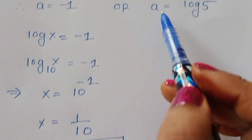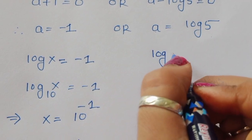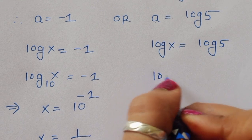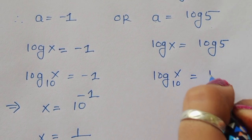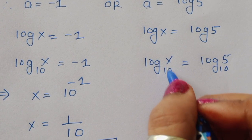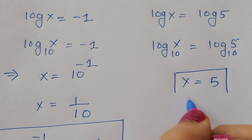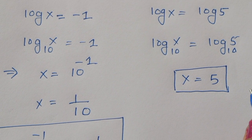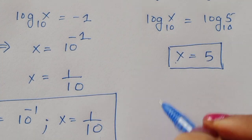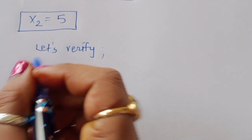For the second equation, a = log(5), and since a = log(x), we get log(x) = log(5), both to base 10. Comparing, x equals 5. So we have two values: x = 1/10 or x = 5. Let's verify both solutions.